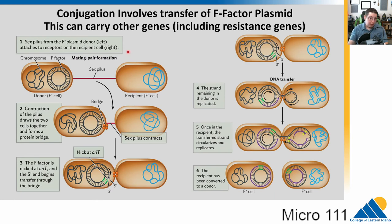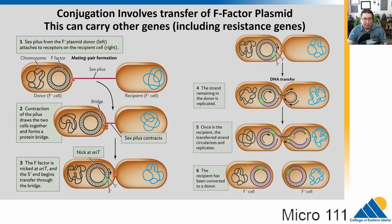To do this, the donor cell must have a specific factor called the F factor — actually just a plasmid that allows this process to occur. The donor cell is called F+; it has the F factor plasmid and can make the conjugation pilus, allowing it to donate the plasmid to the recipient. That in turn makes the recipient F+. Sometimes little bits of other genes come along with this transfer, which could include antibiotic resistance genes.